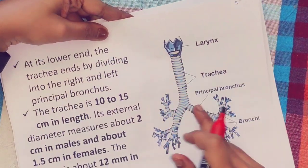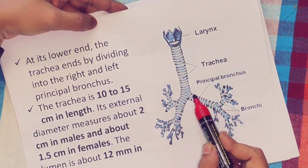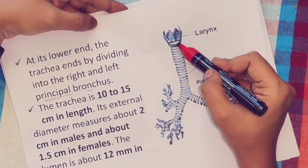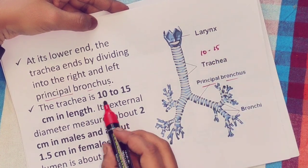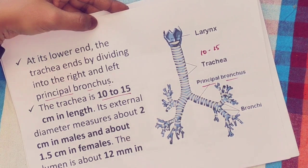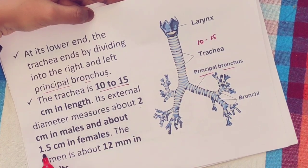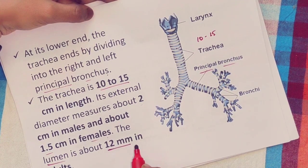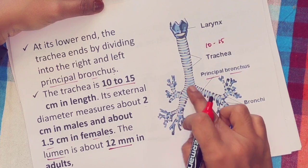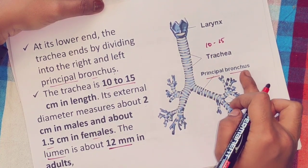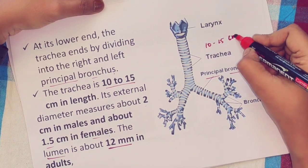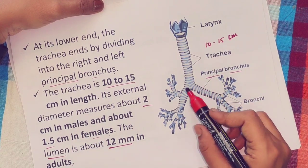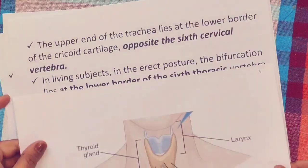The lower end of the trachea divides into the left and right principal bronchi. The overall length of the trachea is 10 to 15 cm. The outer diameter is 2 cm in males and 1.5 cm in females. The inner diameter, that is the lumen, is about 12 mm.